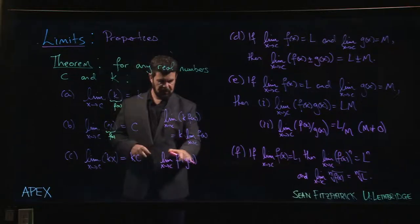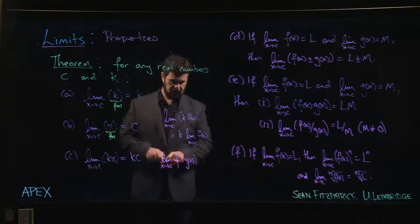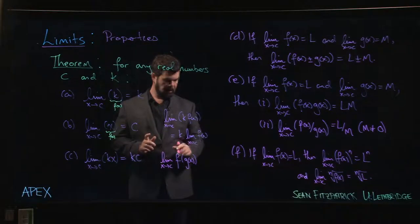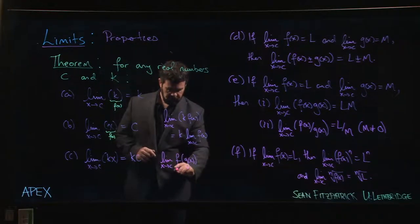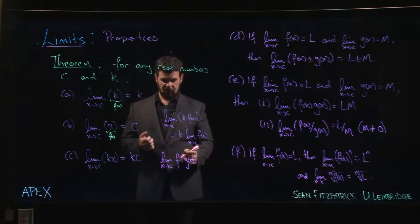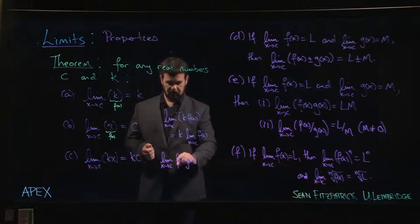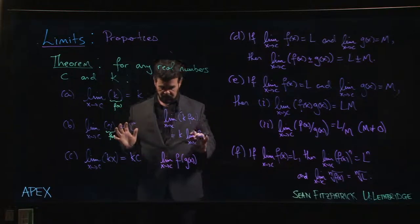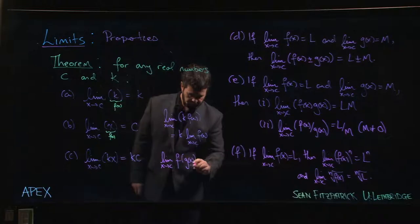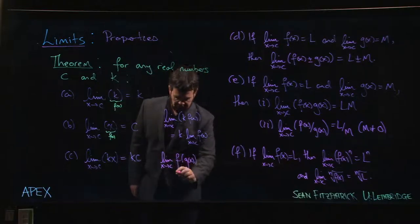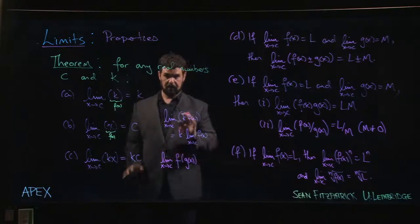Well you can bring the limit inside. But you need to know something about f. You need to know that f is continuous. If you know what it means for a function to be continuous and you've established this function f is continuous, then you can bring the limit in and you can write it as f of the limit of g.